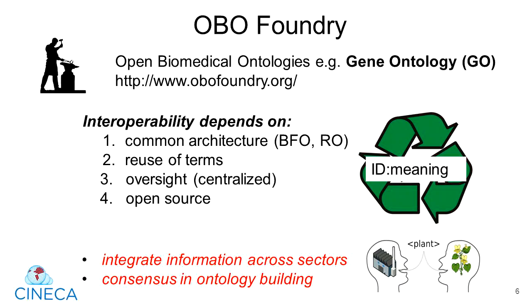The OBO Foundry has gained a lot of momentum over the past few years, and independent ontology developers have contributed over 190 different ontologies. In our work curating and harmonizing different datasets, we've become very familiar with a lot of them, and recommend certain ontologies for describing different types of information. For example, if you're describing different organisms — be they plants, animals, or microorganisms — we recommend using NCBI Taxon.